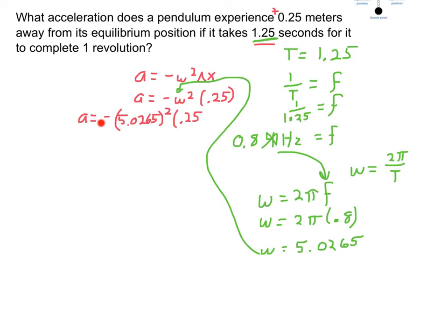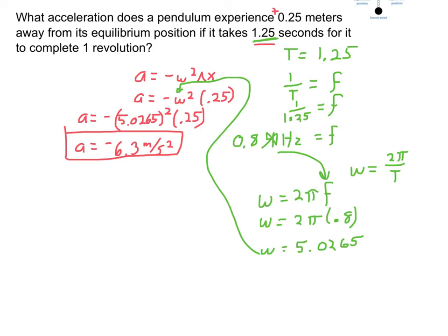Also worth pointing out: this negative sign is not inside the parentheses — the square goes to omega first, and the negative sign is out front. Plugging everything into my calculator, I come out with negative 6.3 meters per second squared. Two significant figures, specifically because my displacement only had 2 significant figures — my period had 3, but you take the least number. So negative 6.3 meters per second squared.